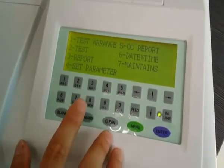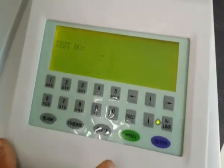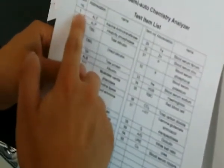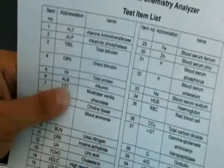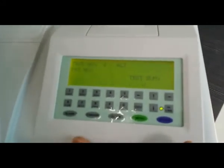And back to the main interface. We turn to the test. Choose number 2. Because we have already set the number 1, so we choose 1 here. Then it will show the ALT test.